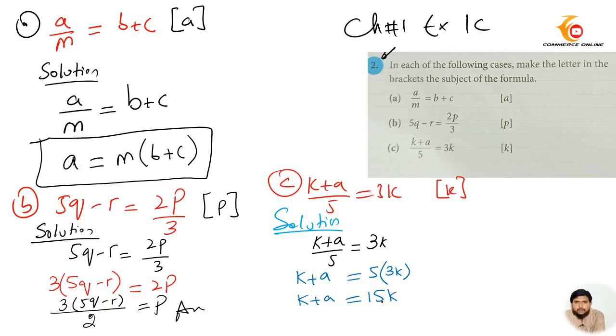Now 15K is in plus, and K is in plus as well. I will change this direction. So 15K minus K equals to A. Now we have A equals to 15K minus K. That will be 14K.